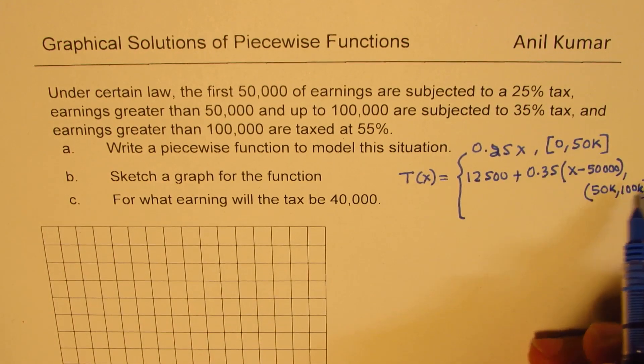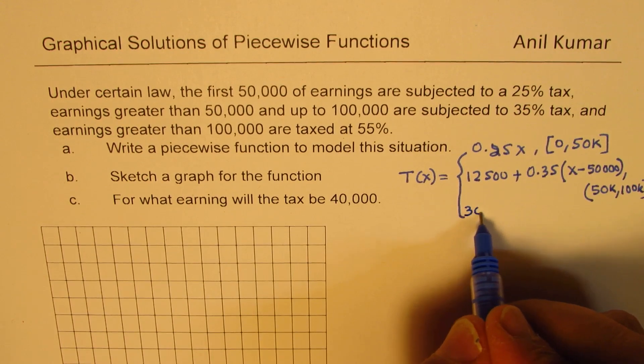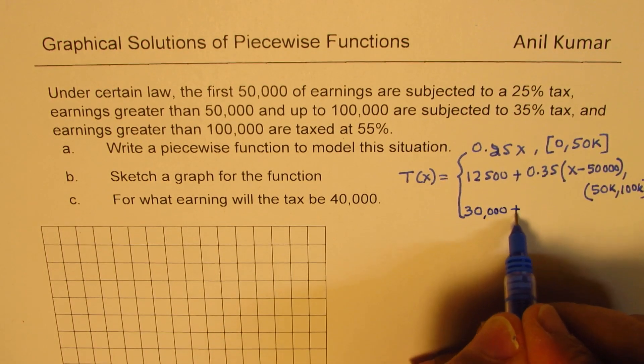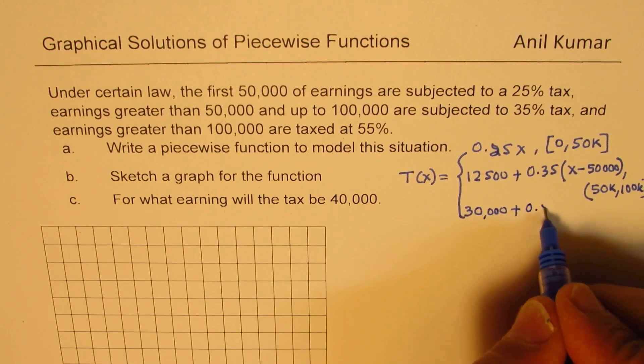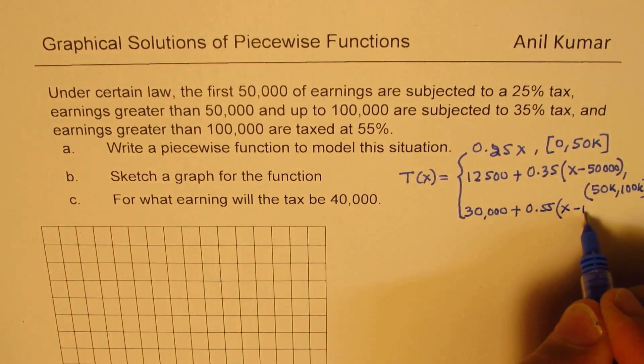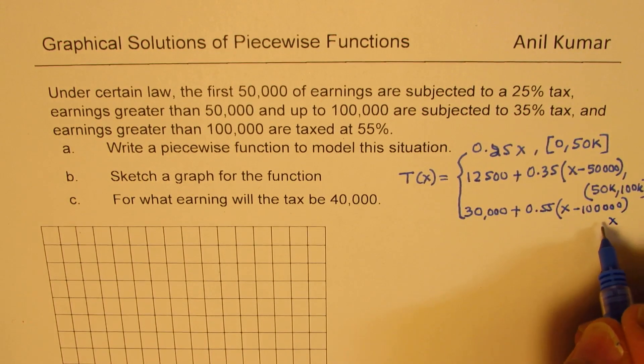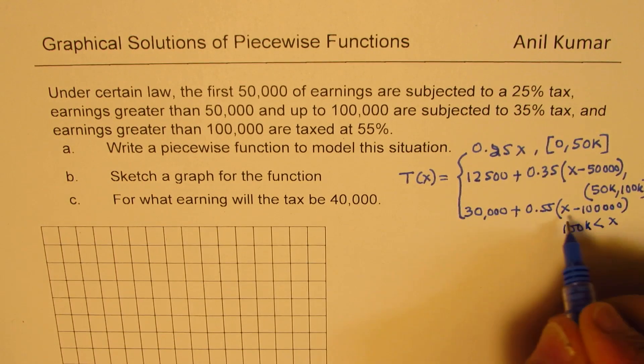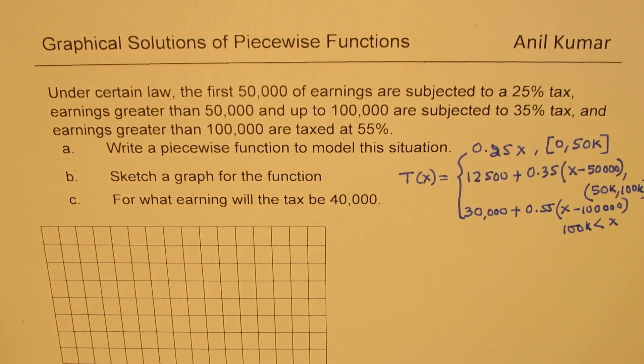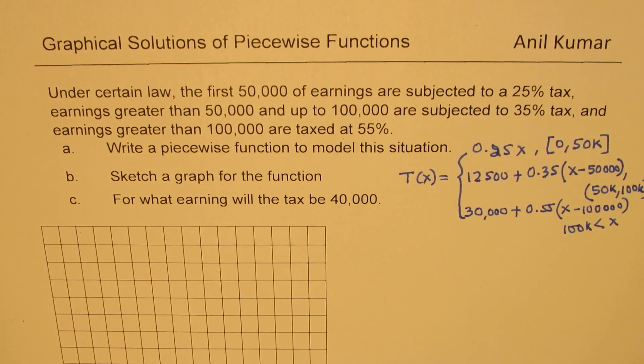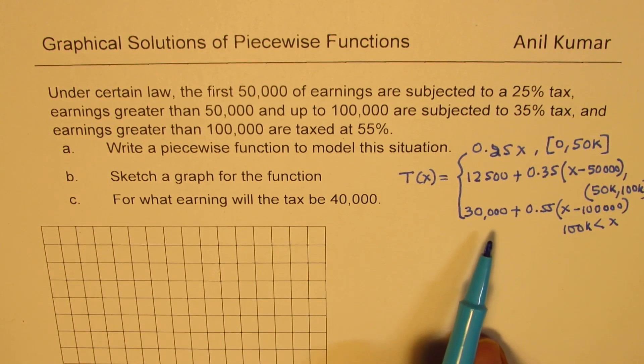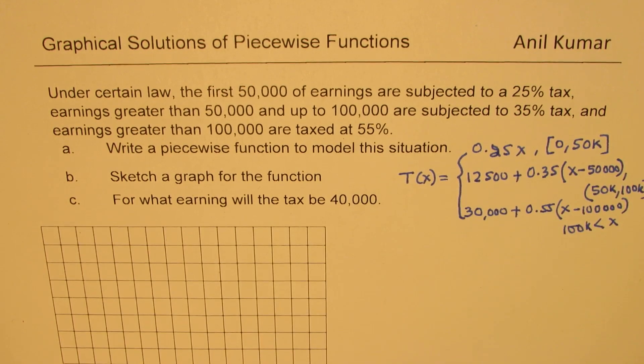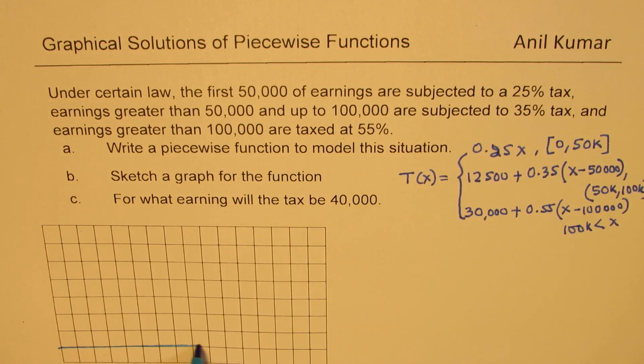The maximum of this is 30,000. So the next bracket starts with 30,000 plus the tax rate is 55% of any amount which is more than 100,000. If the amount is greater than 100K, then that is the tax rate. Now we are going to use this particular graph, and we'll graph this function here. The independent variable here is the earnings.